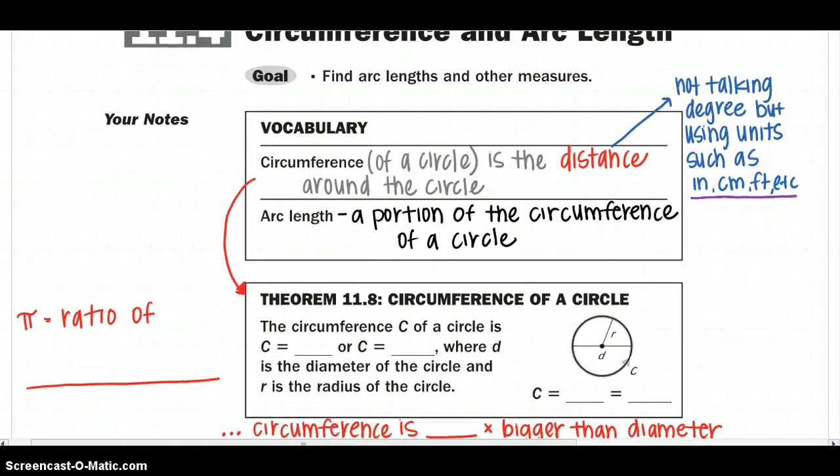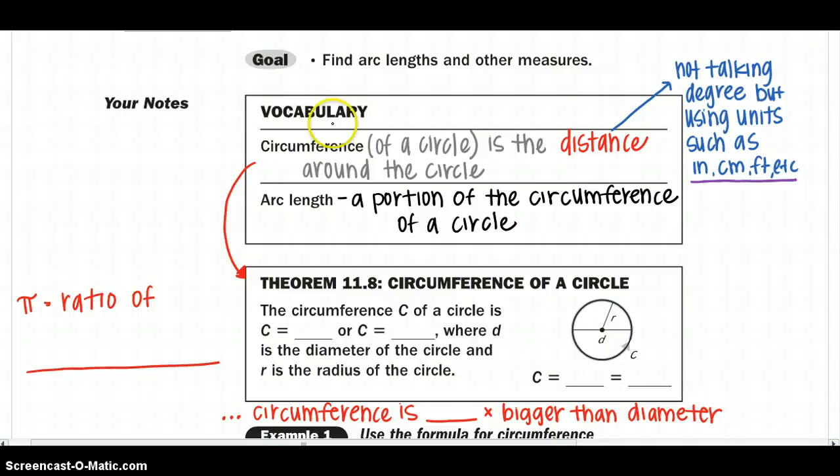So looking at the circumference, and many of you might already know this theorem, but theorem 11.8 says the circumference C of a circle is C equals either pi times our diameter, or our circumference equals 2 pi times our radius, where d is the diameter of the circle, and r is the radius. So either one of those equations will work.